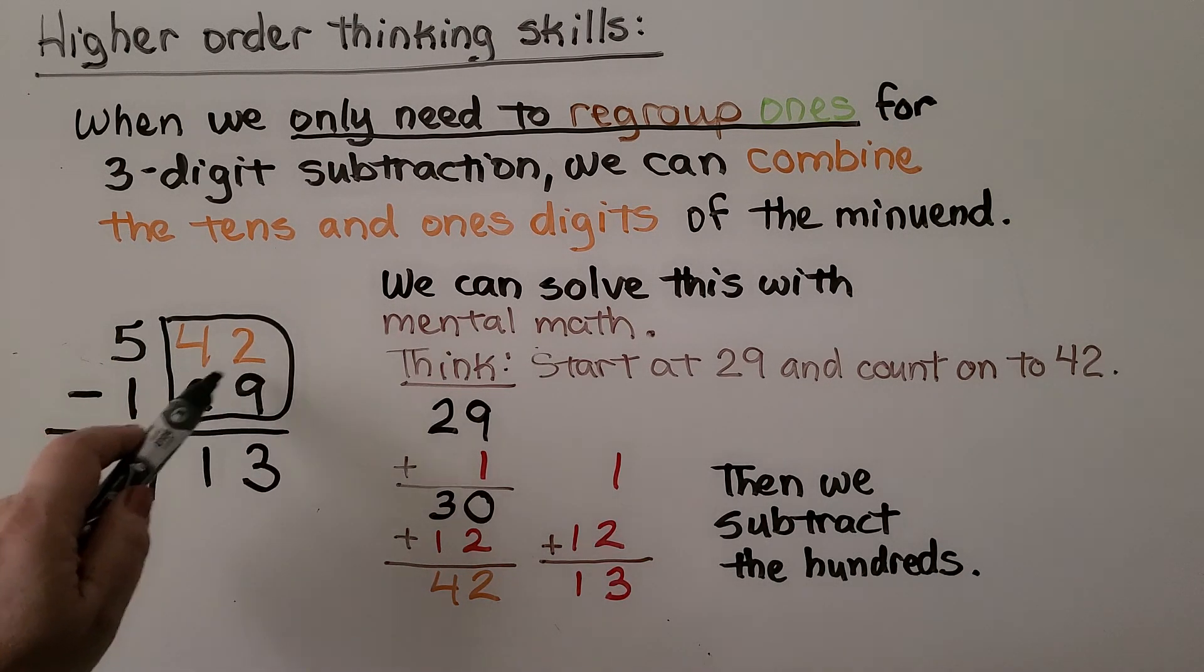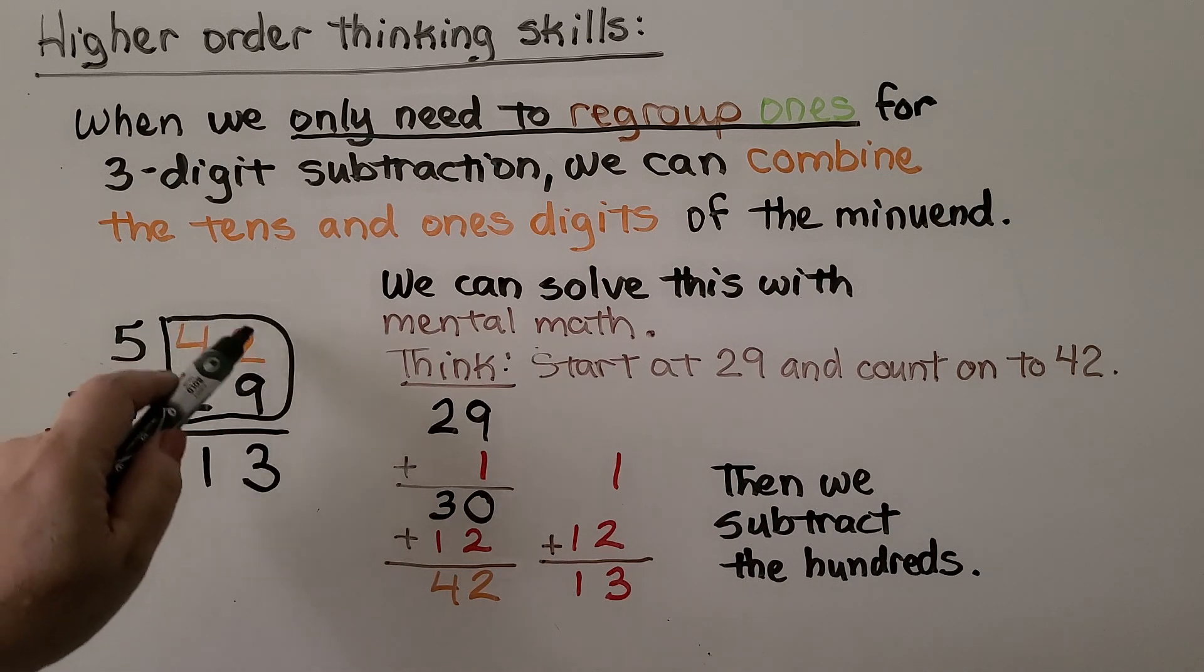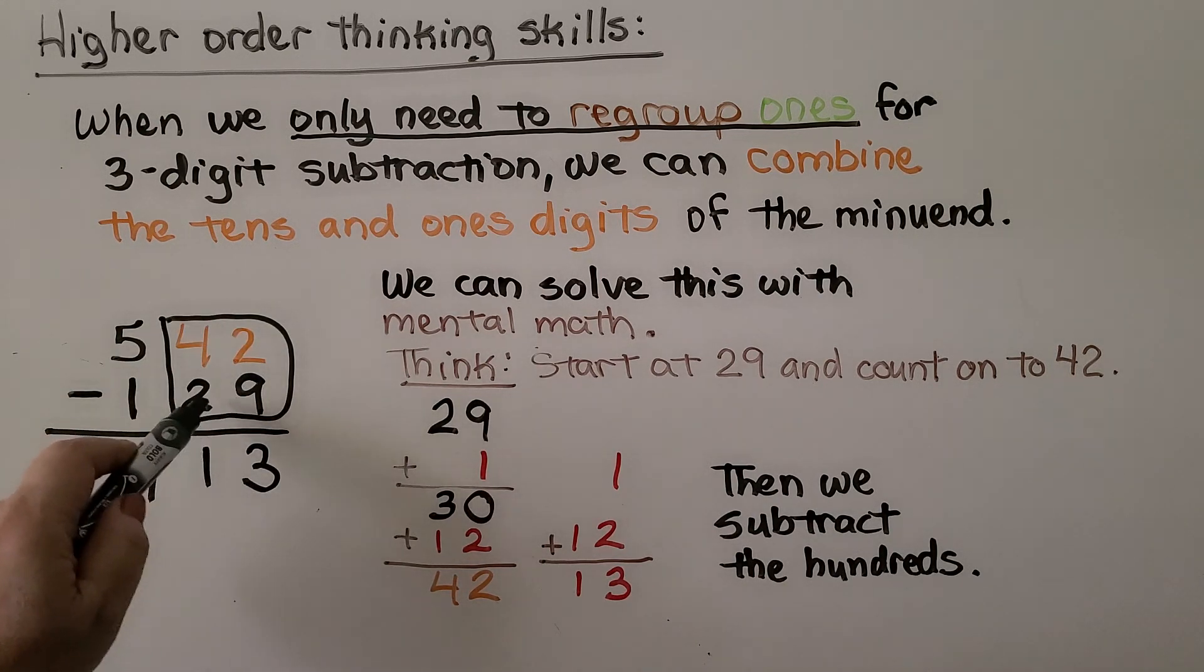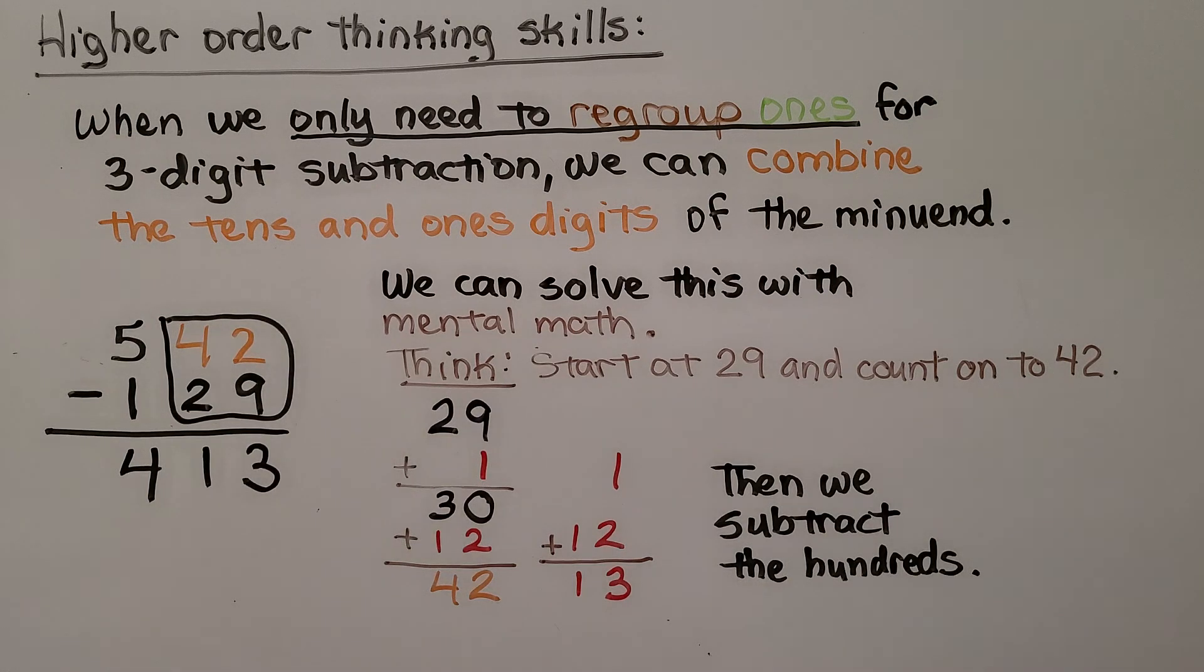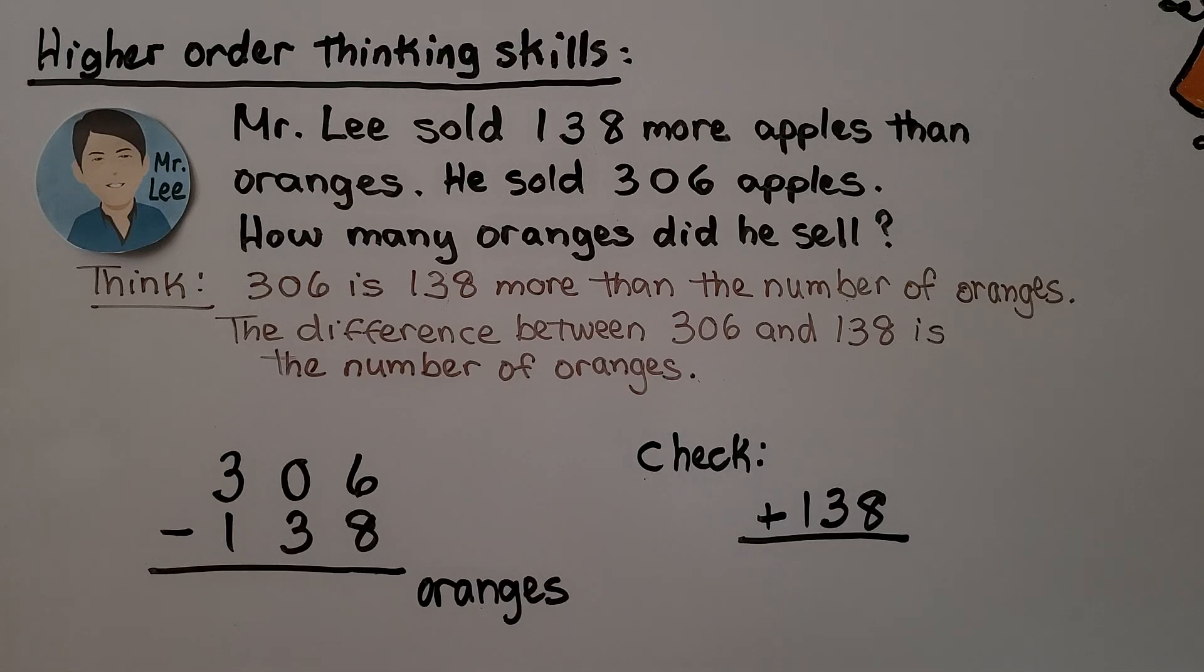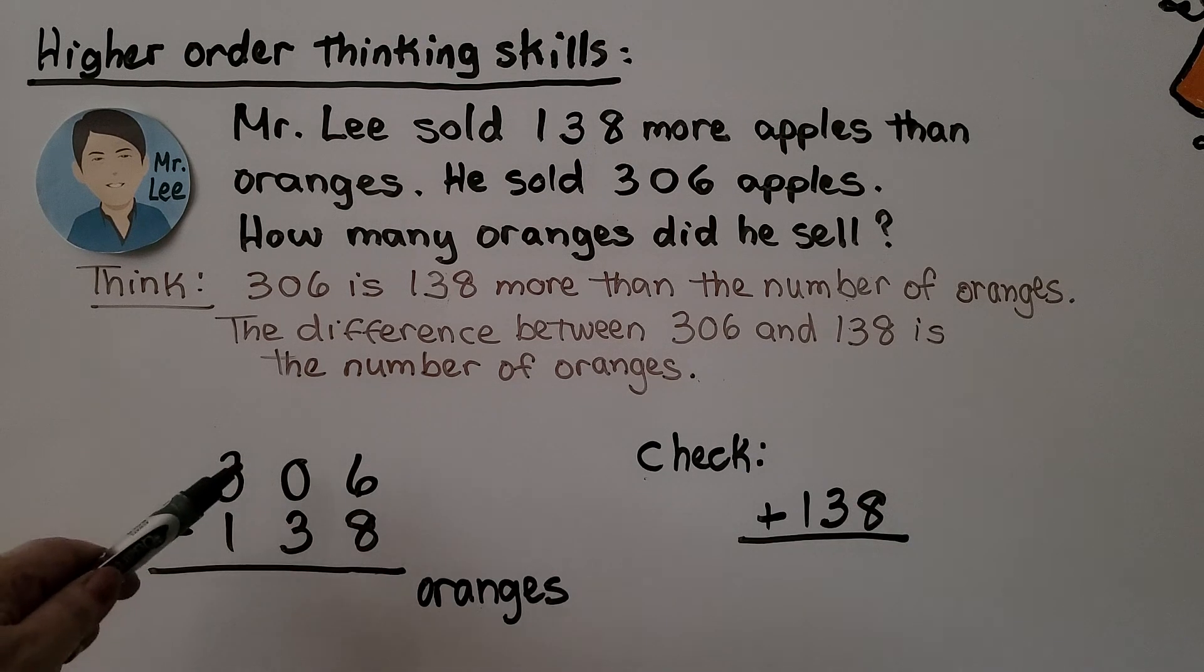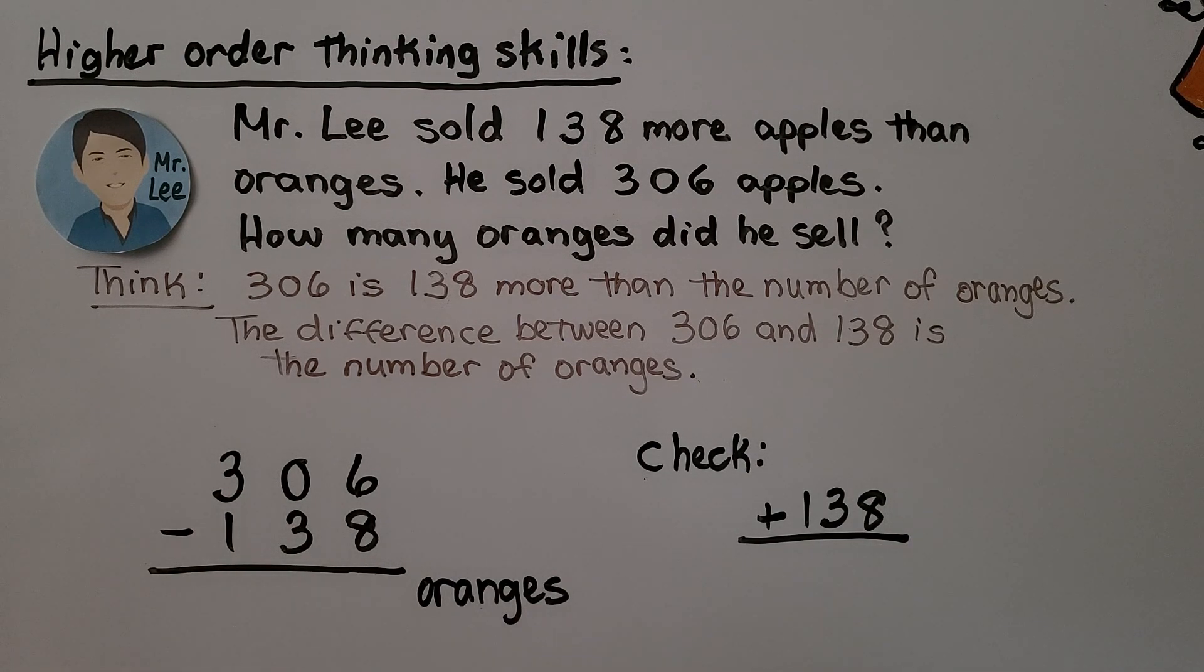We combined these place values because 42 was great enough to take away 29 without having to regroup from the hundreds. We have a word problem that says Mr. Lee sold 138 more apples than oranges. He sold 306 apples. How many oranges did he sell? So we think 306 is 138 more than the number of oranges. And the difference between 306 and 138 is the number of oranges. So we can subtract 306 minus 138 and that'll tell us the number of oranges.